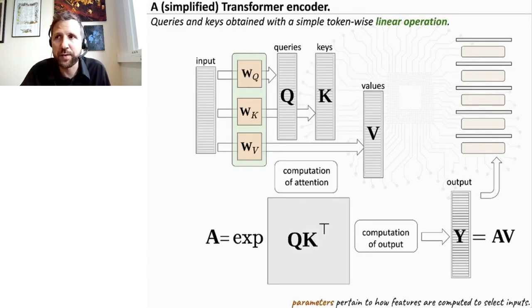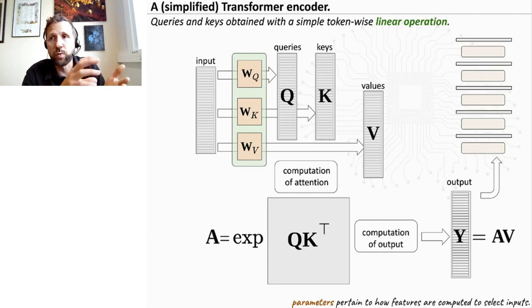What we are missing here is how we compute those features, those queries and keys. So a simple way is just to have the tokens go through a linear transform. So we have three linear transforms. Each token, we compute the corresponding query through some linear module, then the corresponding key and the corresponding value. So these are the parameters. And then all the rest flows. So we compute, we multiply queries and keys with dot product attention. We have this exponentiation. We get the attention matrix, and then we compute the output by multiplying by the values. So parameters pertain to how we get these features. And this is what we train through gradient descent. So this is it. This is the transformer encoder.